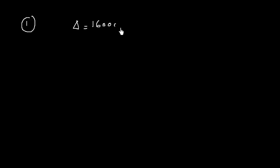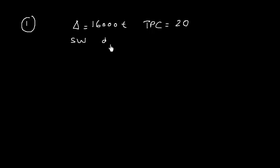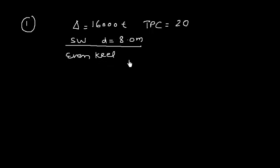Let us understand this exercise which is pretty important — Exercise number five. The first problem is that the ship's displacement is given as 16,000 tons and the TPC is also given as 20. The ship is floating in salt water at a draft of 8 meters, and we can assume it is floating at even keel.